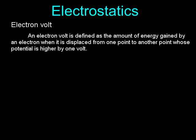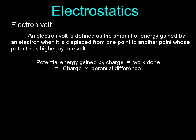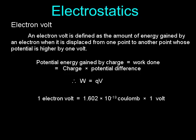Electron Volt: An electron volt is defined as the amount of energy gained by an electron when it is displaced from one point to another point whose potential is higher by 1 Volt. The potential energy gained by a charge equals the work done: W = QV. Therefore, 1 eV = 1.602 × 10⁻¹⁹ Coulomb × 1 Volt = 1.602 × 10⁻¹⁹ Joules.